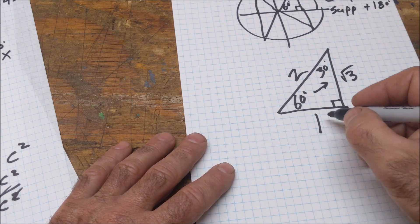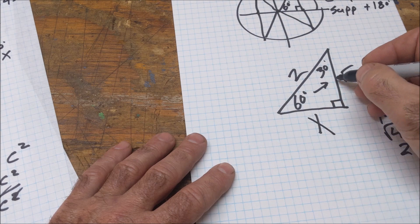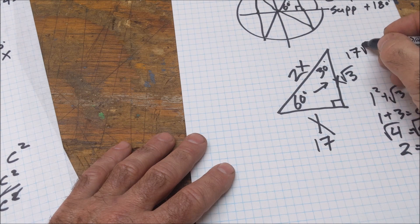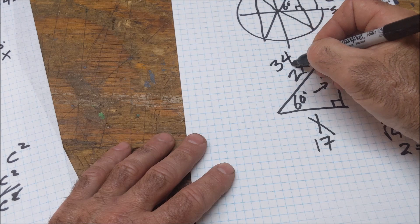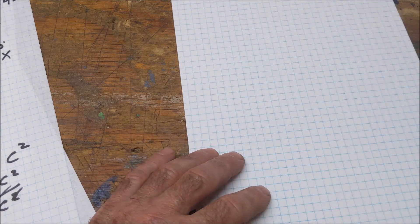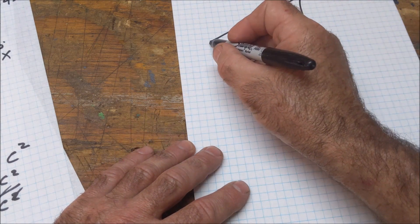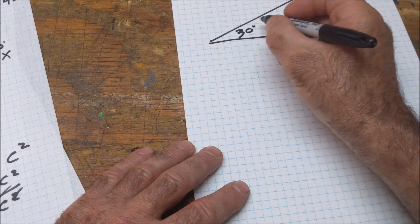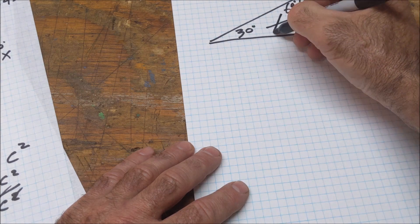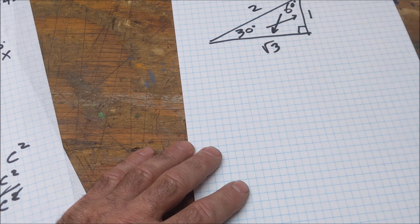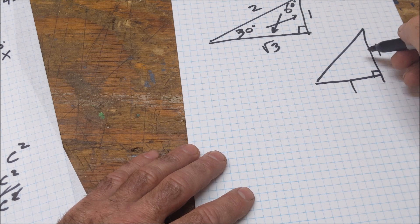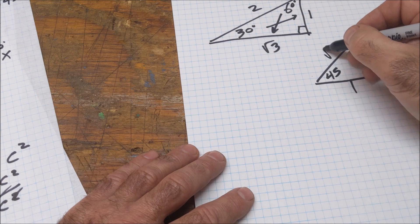That ratio is always the same in any 30-60-90 triangle. If the short side is x, then the side opposite 60 is x√3, and the hypotenuse is 2x. So if the short side is 17, the other leg is 17√3 and the hypotenuse is 34. To summarize: in a 30-60-90, side opposite 30 is 1, side opposite 60 is √3, hypotenuse is 2. In an isosceles right, the legs are equal at 1 and 1, angles are 45 and 45, and the hypotenuse is √2.